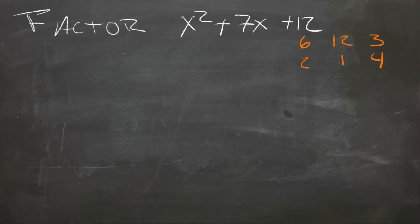There's a number of different possibilities. 6 and 2 would add to be 8, so that won't work. 12 and 1 is 13, that won't work. 3 and 4 is 7, so 3 and 4 is probably our pair. So let's see if that works. We'd have x plus 3 and x plus 4.